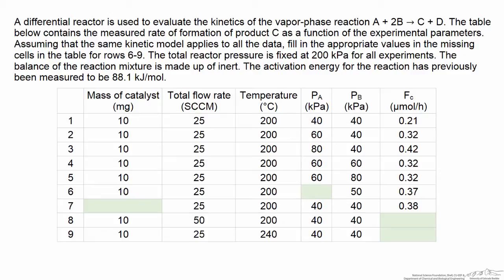This screencast involves the analysis of differential reactor data to fill in some missing cells in this chart. Rows 1 through 5 show a series of measurements done with 10 milligrams of catalyst at the same flow rate and temperature, varying the partial pressures of our two reactants and measuring the flow rate of product. We want to take advantage of the fact that this is a differential reactor to do the analysis required to fill in these missing cells.